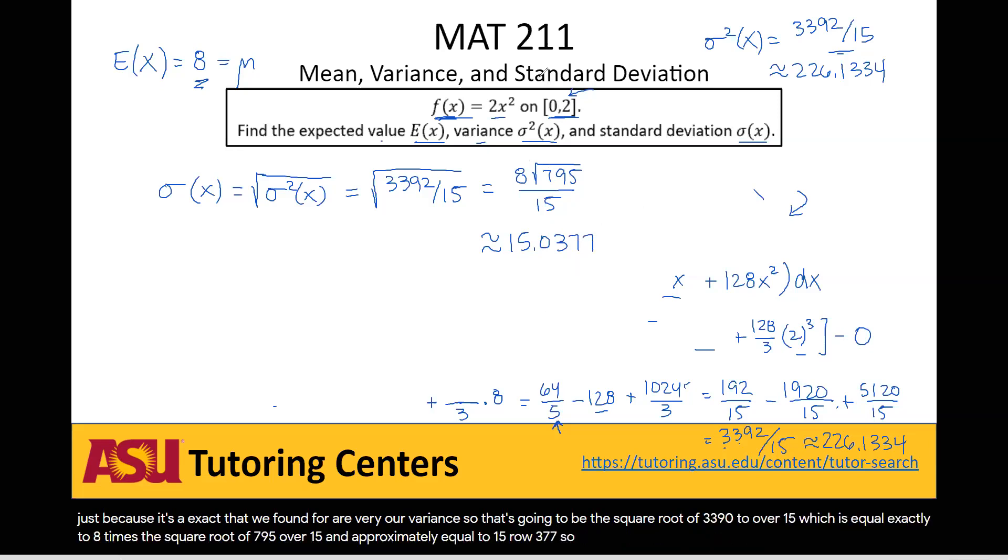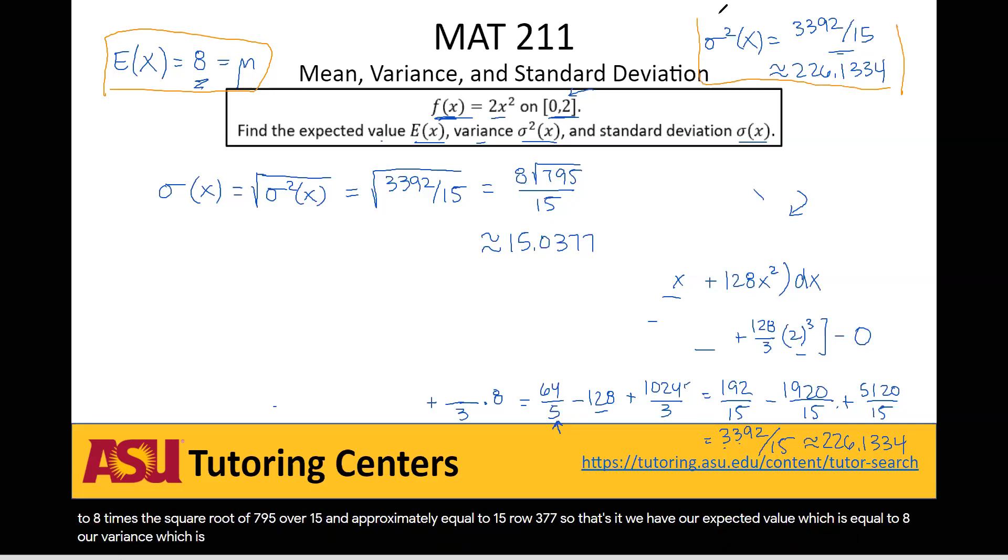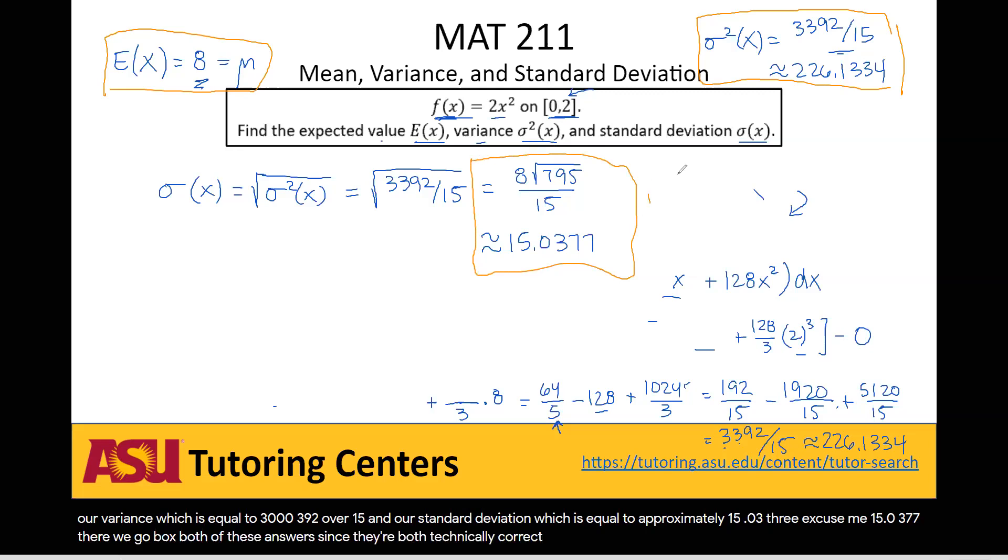So that's it. We have our expected value, which is equal to 8, our variance, which is equal to 3,392 over 15, and our standard deviation, which is equal to approximately 15.0377. So actually, let's go ahead and box both of these answers since they're both technically correct. And that's it.